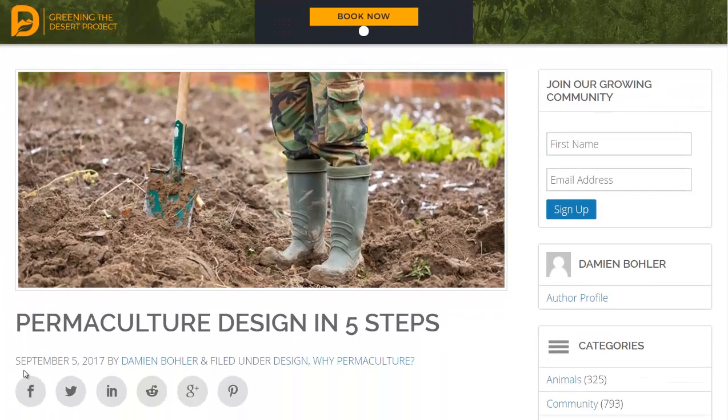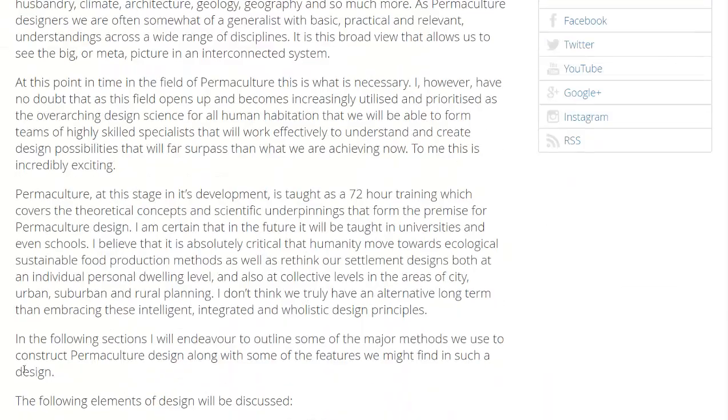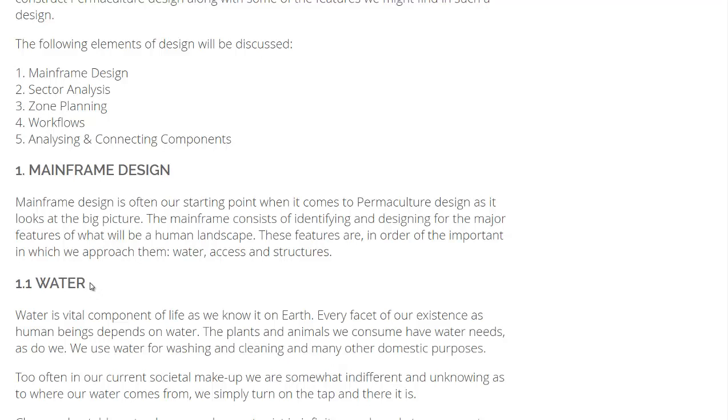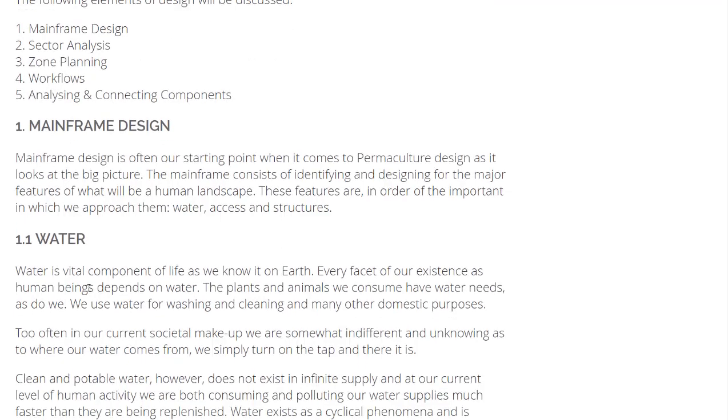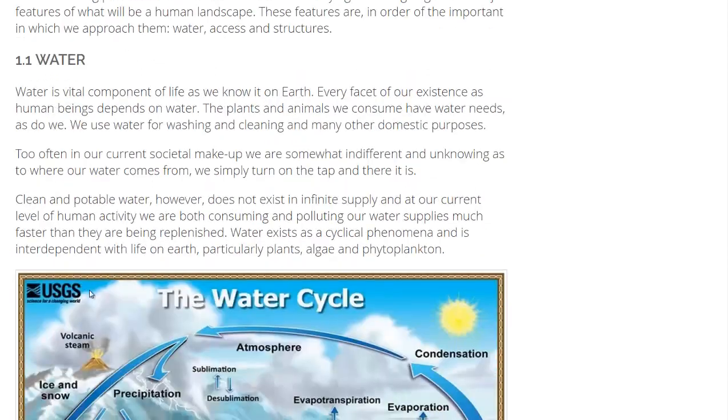They have a very informative article, Permaculture Design in Five Steps. The first step is the mainframe design: understanding how water moves across your land, the access through roadways or walkways, and the structures on the farm—tool sheds, homes, animal shelters, that sort of thing.